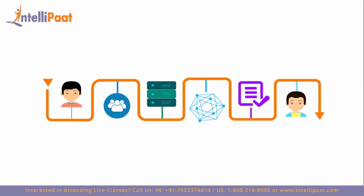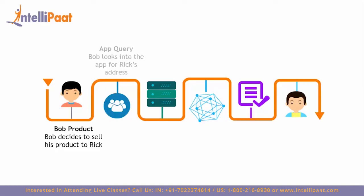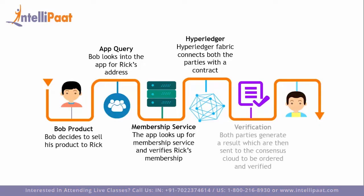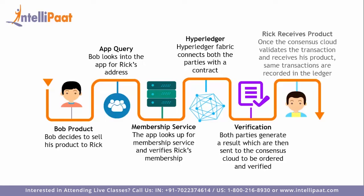To summarize the flow: Bob wants to sell his products and looks into the app for Rick's address on the network. The app looks for the membership service and validates Bob's membership. Once validated, Hyperledger Fabric connects both parties. Both Rick and Bob generate a result which is sent to the consensus cloud to be ordered and verified, and once verified, Rick receives his products and the transaction is recorded in the ledger.